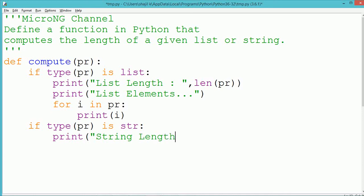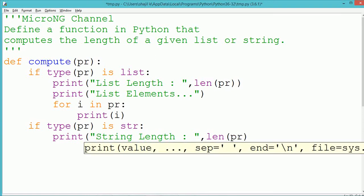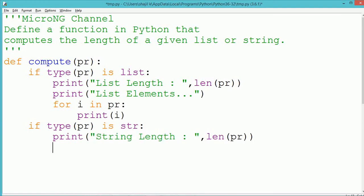In the next if statement, we check the type of pr whether it is a string. If the type of the parameter pr is string, we display the length of the string by using the len method.